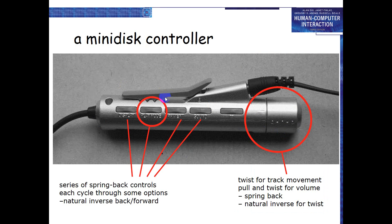Ergonomics says buttons should be large enough to easily tap with your finger, but if buttons are large, there is less physical space and you cannot fit many buttons. If you add more buttons, ergonomics suffers. This is the trade-off. The solution is multi-function controls and reduced functionality — a single control provides multiple functions.